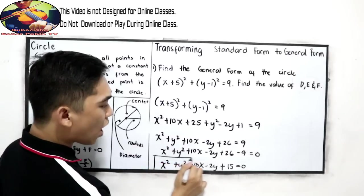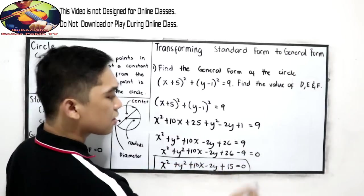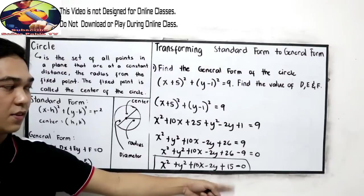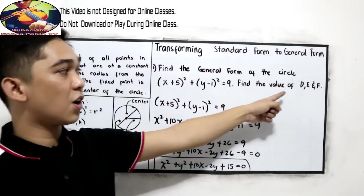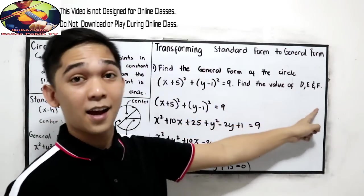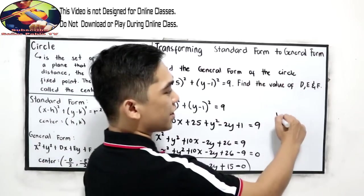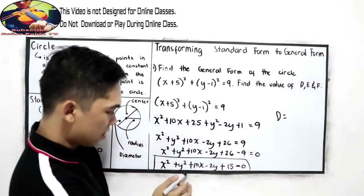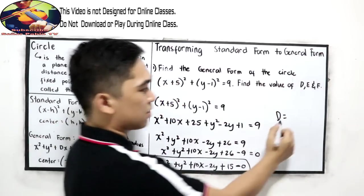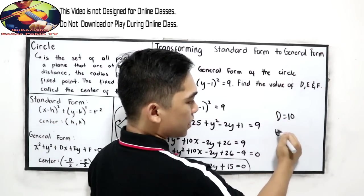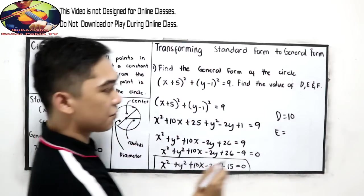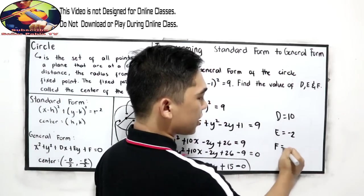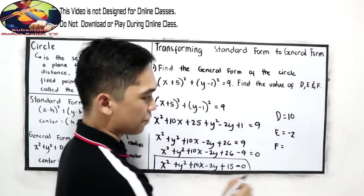This is now our general form. Find the value of D, E, and F: D is equal to 10, E is negative 2, and F is 17.